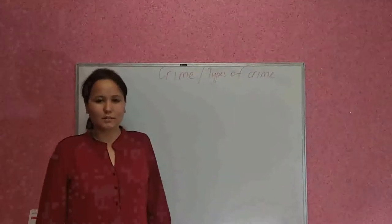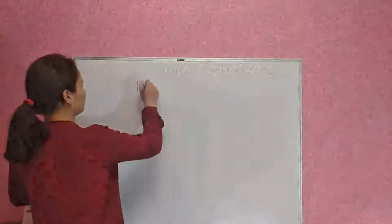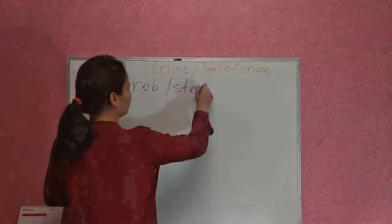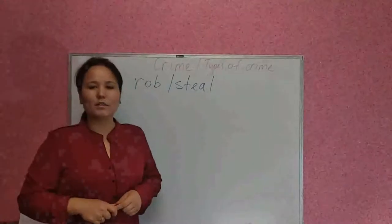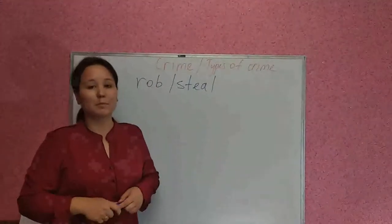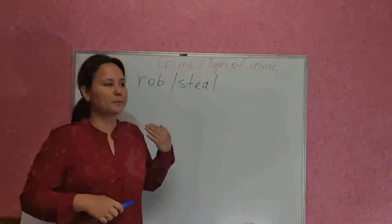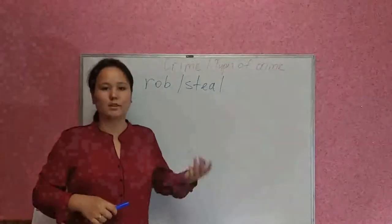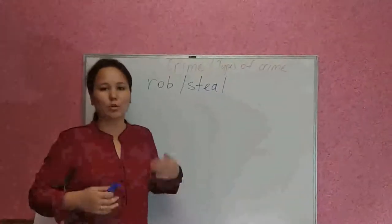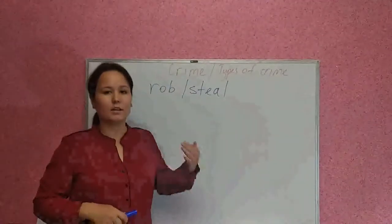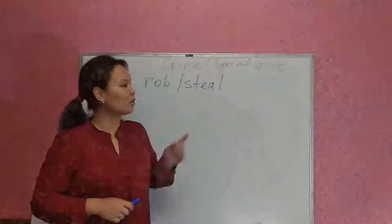Now take a look at section A. There are two verbs: rob and steal. What is the difference between them? Let's start with steal. We can steal something — the object is a thing. For example, 'He stole my bike yesterday' or 'My bike was stolen yesterday.' What about robbing? We can rob a person or some place. For example, 'He was robbed last night' or 'The bank was robbed yesterday.' I hope that's clear.